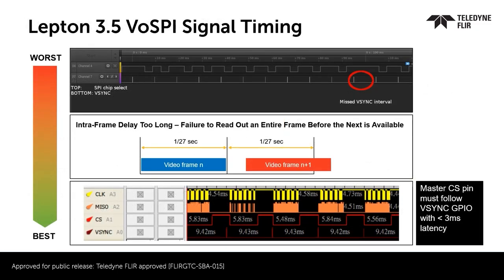Here are a few examples of the different types of failures that can occur on the SPI interface. In the top example, the interrupt never tried to read over the SPI interface. The frame before the red circle responded late on the chip select, and on the next frame it never happened — which could be an issue with latency.